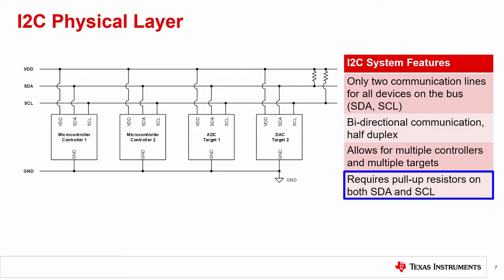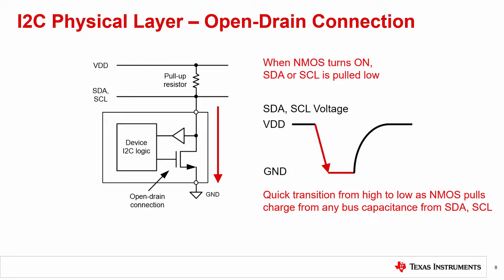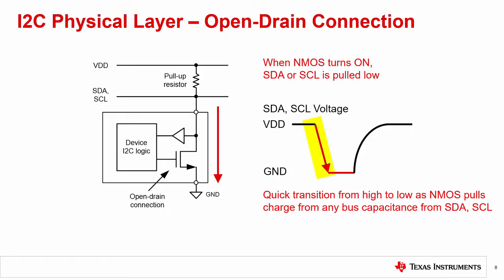The SDA and SCL lines have an open drain connection to all devices on the bus. This requires a pull-up resistor to a common voltage supply. The open drain connections are used on both SDA and SCL lines and connect to an NMOS transistor. This diagram shows an I2C device connected to an SDA or SCL line with a pull-up resistor to VDD. This open drain connection controls the I2C communication line and pulls it low or releases it high. To set the voltage level of the SDA or SCL line, the NMOS is set on or off. When the NMOS is on, the device pulls current through the resistor to ground, pulling the line low. Typically, the transition from high to low for I2C is fast as the NMOS pulls down on SDA and SCL. The speed of the transition is determined by the NMOS drive strength and the bus capacitance on SDA or SCL.